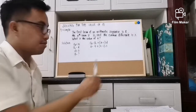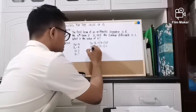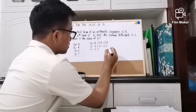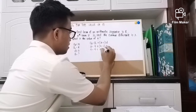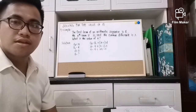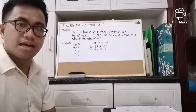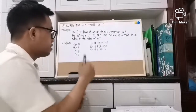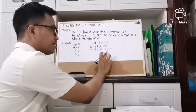Next, we distribute 3 to n and to negative 1. Then to separate numbers with variables from those without variables, we apply the Addition Property of Equality. To cancel out 4 on the right side, we put negative 4 on both sides, and to cancel out negative 3 on the right side, we put positive 3 on both sides.